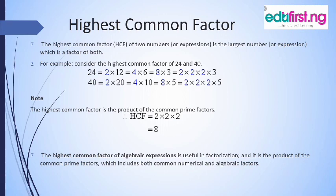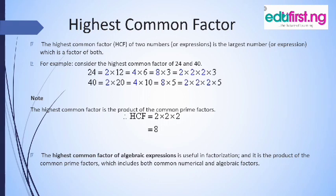For example, here we have 24 and 40. The factors of 24: 2 times 3 gives 24, 4 times 6 gives 24, 8 times 3 gives 24. Breaking it down: 2 times 2 times 2 times 3 will give us 24. For 40 also: 2 times 2 times 2 times 2 times 5 will give us 40. So the highest common factor is the product of the common prime factors. Remember, a prime number has two factors — one and itself.